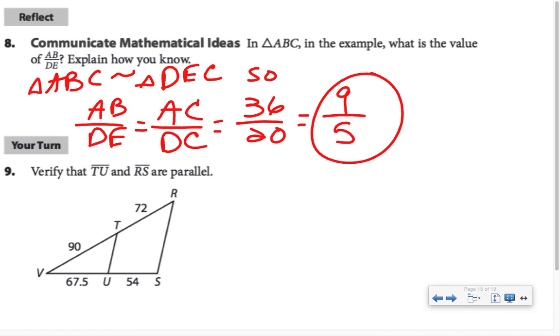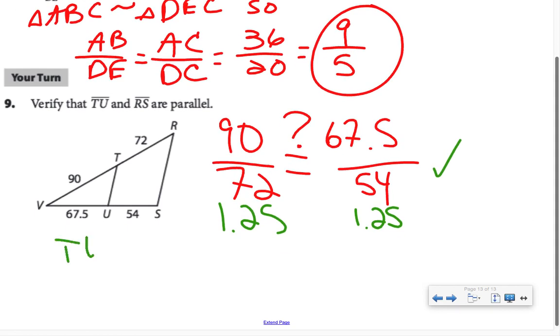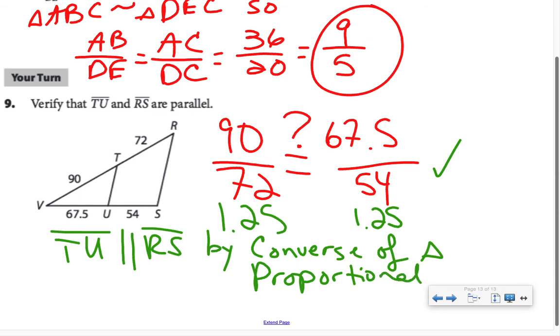The last example for our video: we're verifying that TU is parallel to RS. We would do so by showing that TU divided the other two sides of the triangle into proportional segments. I'm comparing 90 over 72 to 67.5 over 54. In my calculator, I evaluate 90 divided by 72, I get 1.25. I divide 67.5 by 54, I also get 1.25. So yes, those ratios are equivalent. Therefore, TU is parallel to RS by the converse of the triangle proportionality theorem.